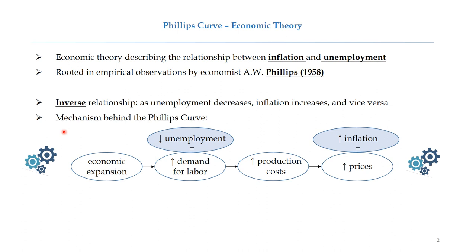The Philips Curve mechanism depends on the state of the business cycle. During economic expansion, demand for labor rises, production costs increase, as well as prices. When we say that demand for labor rises, it means that unemployment decreases. Similarly, when we say that overall prices increase, it means that inflation increases. The mechanism is the opposite in the case of economic recession.